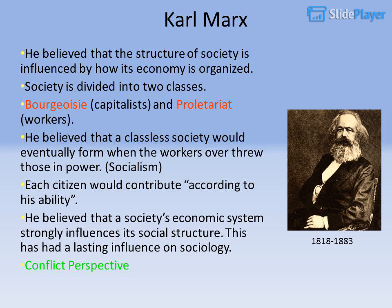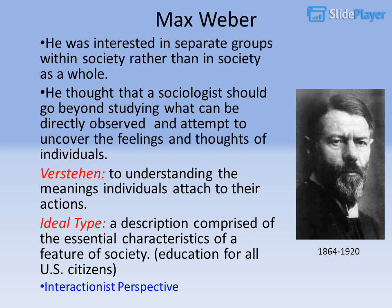1818–1883. Max Weber: He was interested in separate groups within society rather than in society as a whole. He thought that a sociologist should go beyond studying what can be directly observed and attempt to uncover the feelings and thoughts of individuals — understanding the meanings individuals attach to their actions. Ideal Type: a description comprised of the essential characteristics of a feature of society, such as education for all U.S. citizens. Interactionist Perspective.